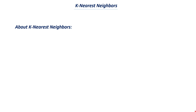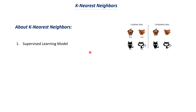K-nearest neighbor is an example of a supervised learning model. Machine learning is of two types: unsupervised learning and supervised learning. In supervised learning we use a labeled dataset, whereas in unsupervised learning we mainly use an unlabeled dataset. For example, if we want to create a model that predicts whether an image represents a dog or cat, in supervised learning we feed the model images and tell it which are dogs and which are cats. In unsupervised learning we just give the images and the model tries to group similar data points. K-nearest neighbor requires a labeled dataset.